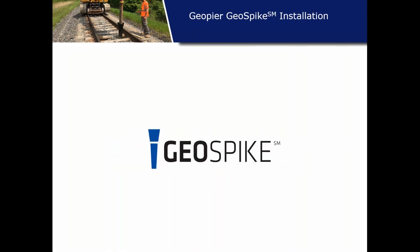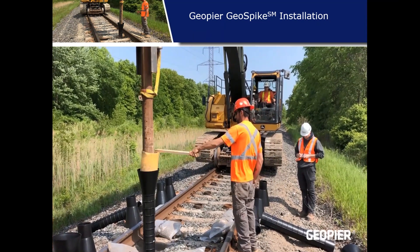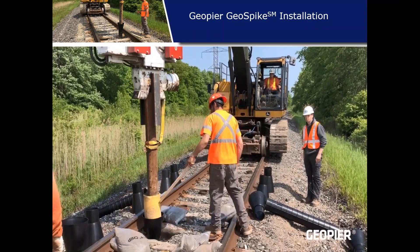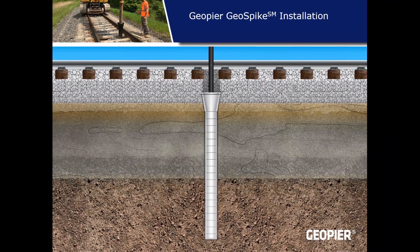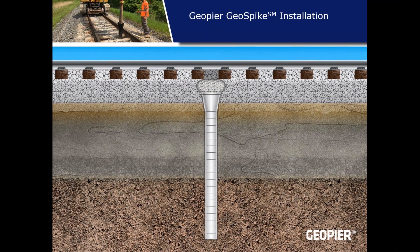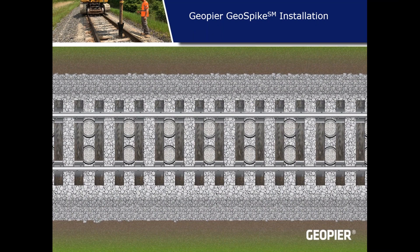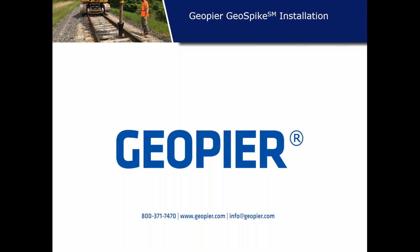The next video shows the installation process on an actual project. The equipment is set up on high rail with the specially designed mandrel inserted inside the GeoSpike and driven down to the proper length. The top of the spike is driven to about 10 to 12 inches below the bottom of ties, backfilled with aggregate, and the mandrel is used to recompact the aggregate at the top. The GeoSpikes are installed in pairs near the rail lines every other crib, completing the GeoSpike ground improvement solution.